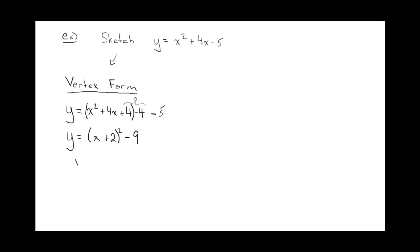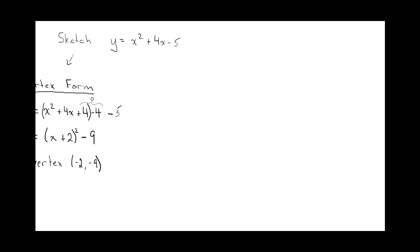So you know that the vertex is negative 2, negative 9. And then you could plot the function using transformations. So that's one way to do this question.